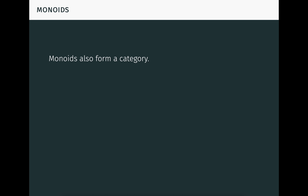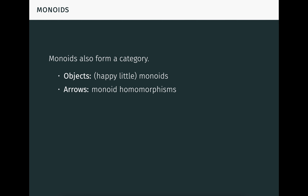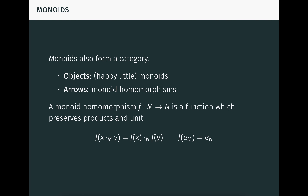Monoids also form a category themselves. The objects are monoids, and the arrows are homomorphisms. A homomorphism is just a function which preserves monoid products and the unit. Composites and identities are defined in the obvious way.